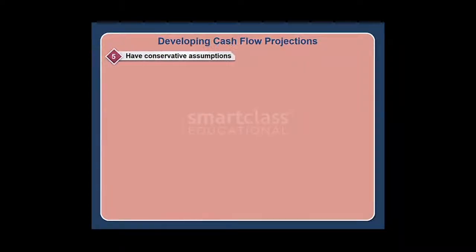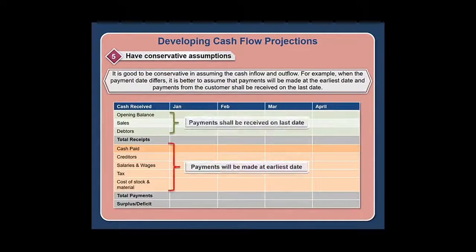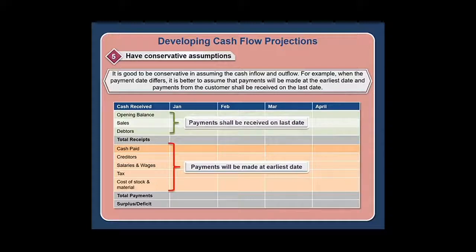Step five: have conservative assumptions. It is good to be conservative in assuming cash inflow and outflow. For example, when the payment date differs, it is better to assume that payments will be made at the earliest date and payments from customers shall be received on the last date.